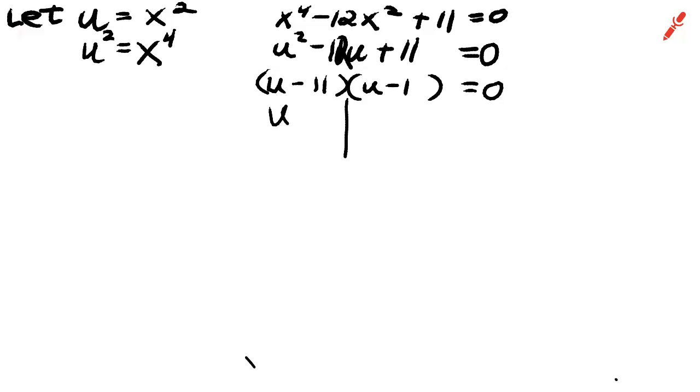Set each factor equal to 0 and solve the resulting equation. But we're not done. Because remember, we're looking for x. And u equals x squared.